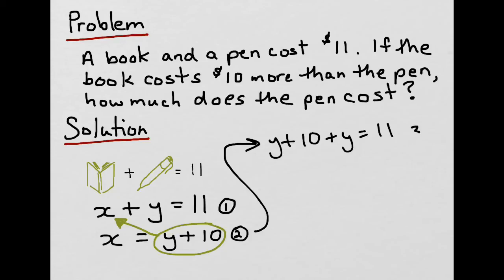And what I end up with is a third equation. It only has one variable, which is great, the variable y, which is the cost of the pen, which is what we want. And I can just now solve for y. The first step is to collect the like terms. I've got a y here and a y here. So this becomes y plus y is 2y plus 10 equals 11.